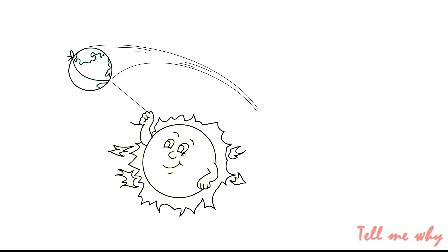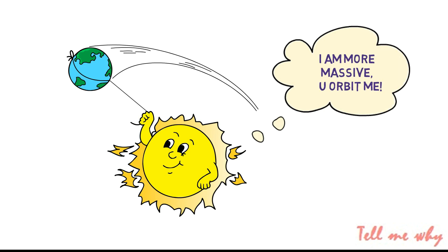No, because as per the laws, the less massive body will always orbit the more massive body. Although it is possible for a planet to be larger than the star by volume, stars are always more massive than planets. Let's break this down.